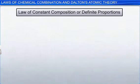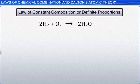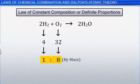For example, the water we get from any source, such as river, well, lake, sea, or from any other place, always contains hydrogen and oxygen elements in the ratio of 1 is to 8 by mass. Thus, we can say that a given compound always contains exactly the same elements in the same fixed proportion by mass.